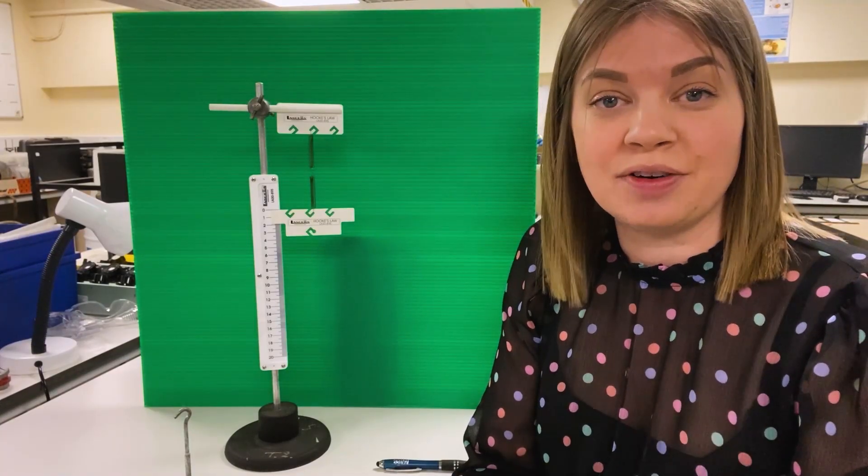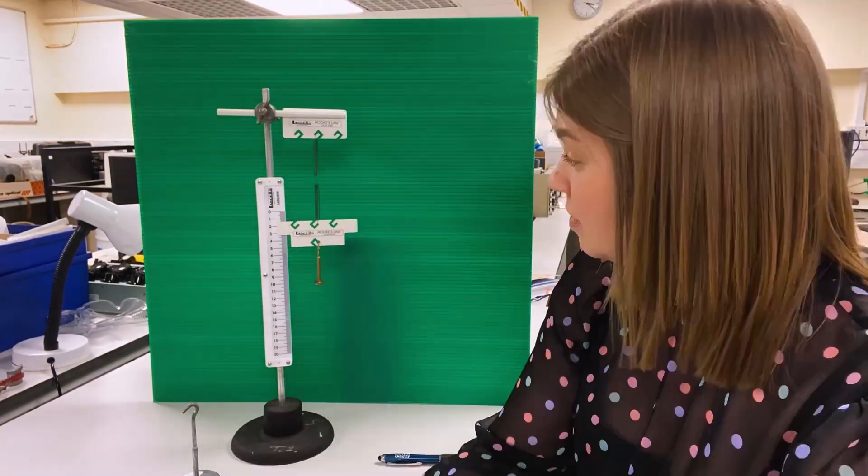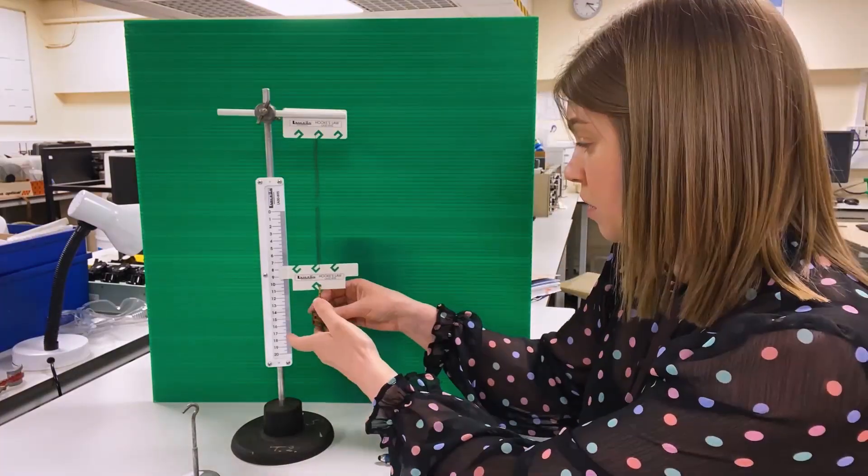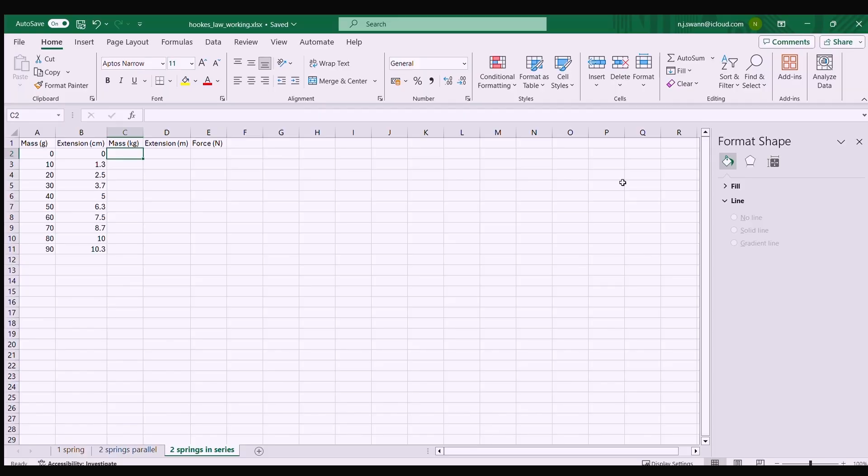Here we are with the data set for two springs in series for Hooke's law. I've got my mass in grams in column A, extension in centimeters in column B. Let's convert everything into SI units like before, so I'm just going to do the conversions, drag them down, work out what my force is from my mass.